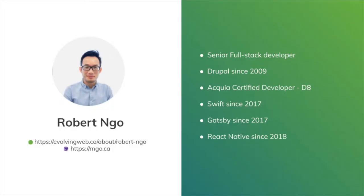My name is Robert. I am working at Evolving Web. I am a full stack developer. I have been doing Drupal for 10 years and I have been working with Swift for the last two years, Gatsby from last year until now, and React Native from last year. You can find more information about me on the Evolving Web website or on my personal site which is a Gatsby site.